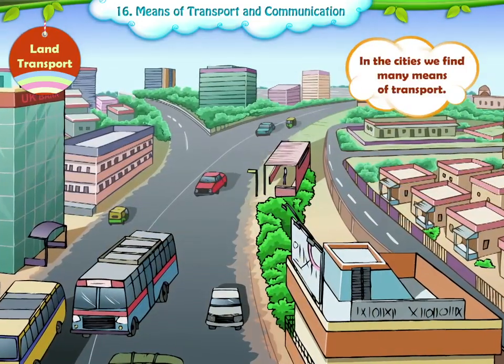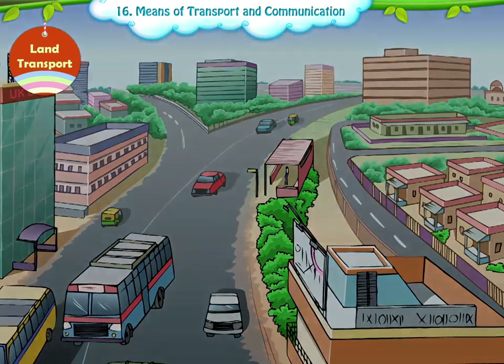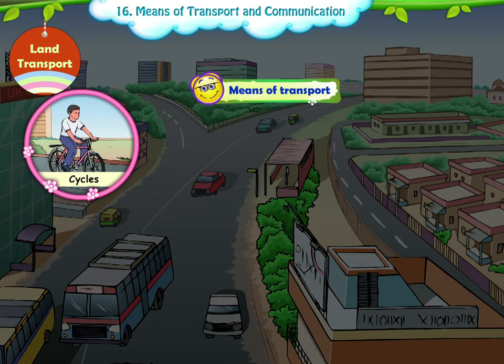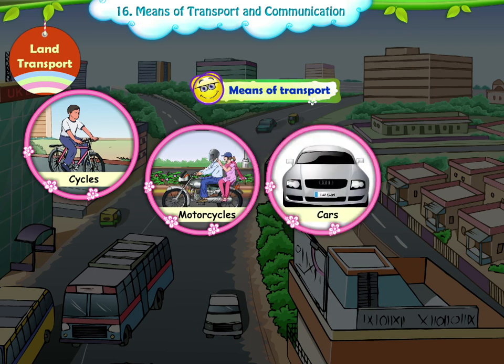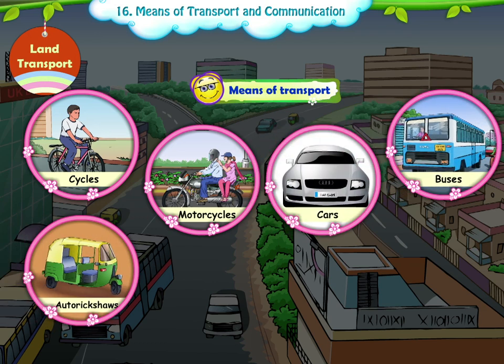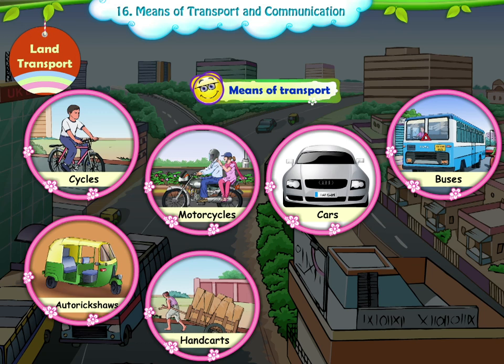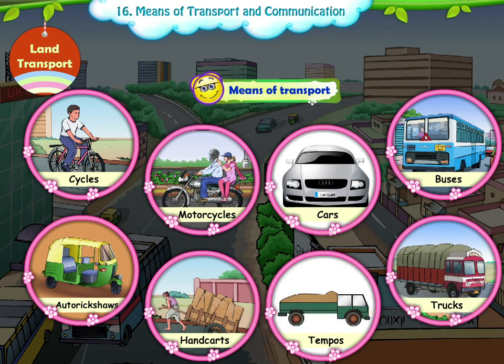In the cities, we find many means of transport. People use cycles, motorcycles, cars, buses, and auto rickshaws for transport. To carry goods, people use hand carts, tempos, and trucks.